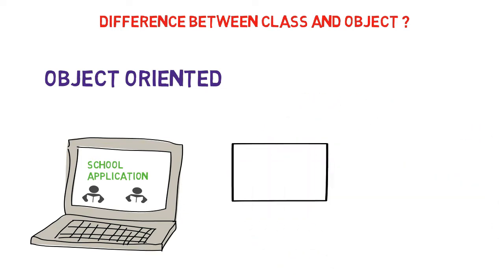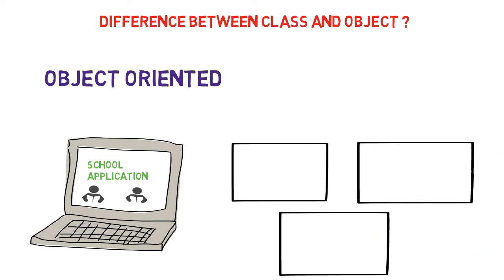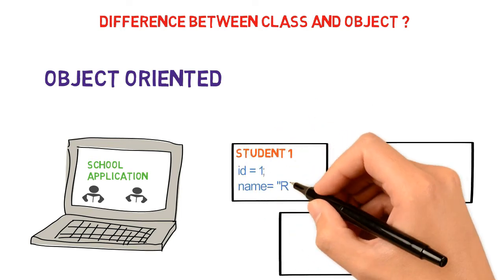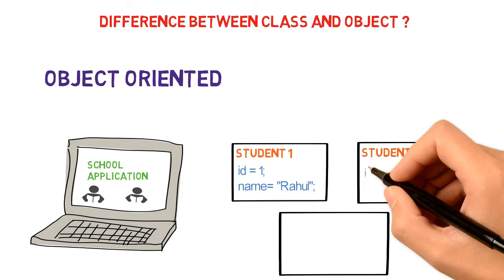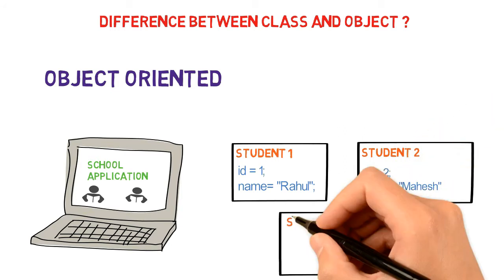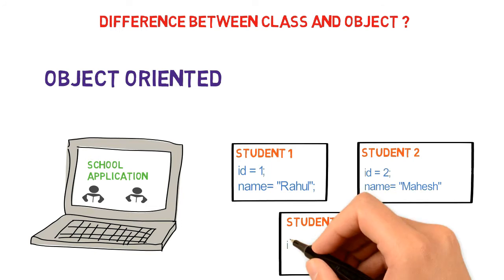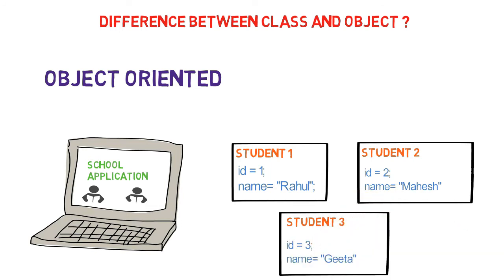For example, if you want to store student details, you'll create an object of student, and each student will have certain properties and behaviors. For example, the first student will have ID 1 and name Rahul, the second student will have ID 2 and name Mahesh, and one more student with ID 3 and name Geeta. We will have different objects for different students, and since these students are real-world entities, they are known as objects.